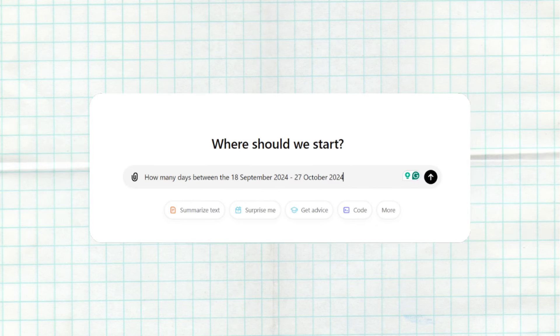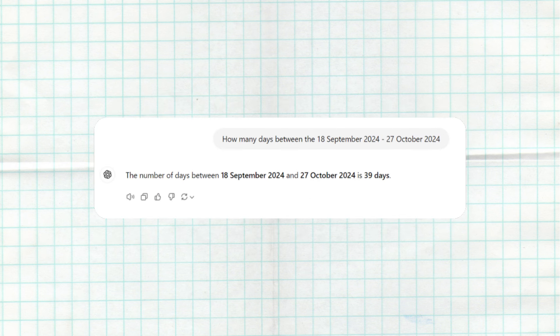Then using chat GPT, you're going to type the following: How many days between 18th of September 2024 till 27th of October 2024. The result will be 39 days. In my case, obviously in your case it's going to be different. This is going to be the number of days that you're going to be studying between the day that you want to study and the week before your exam.